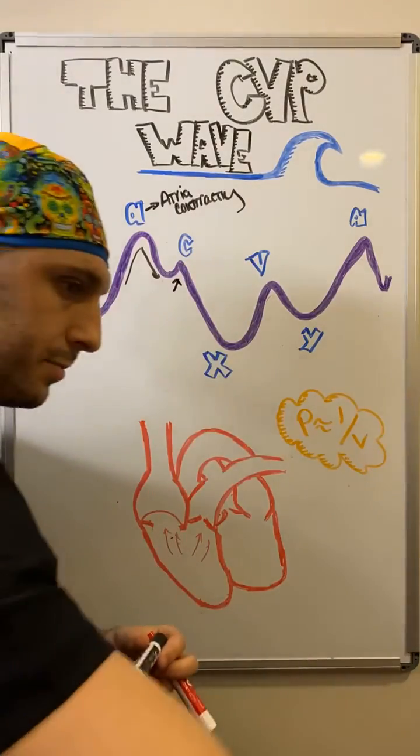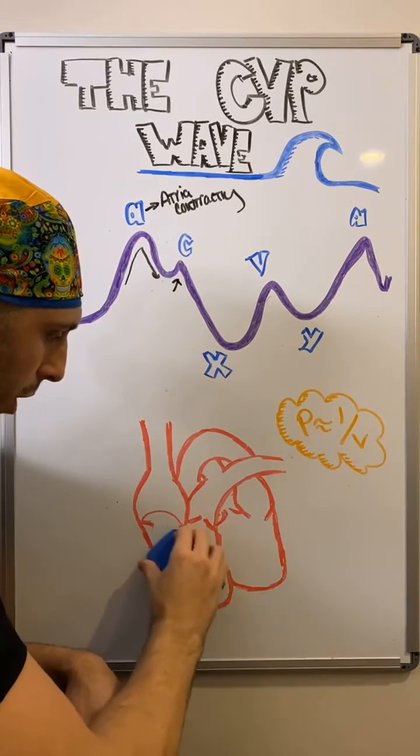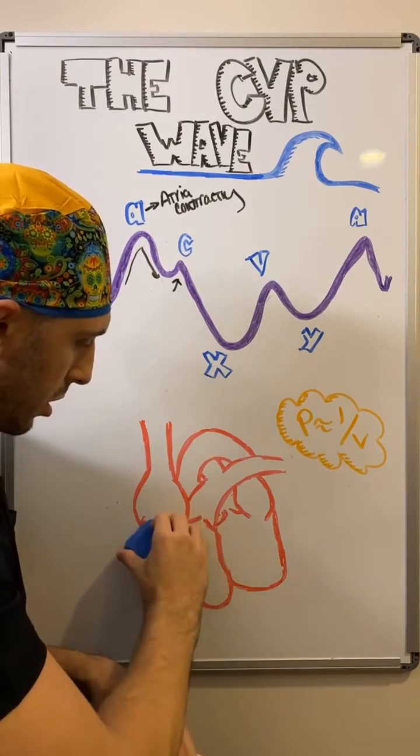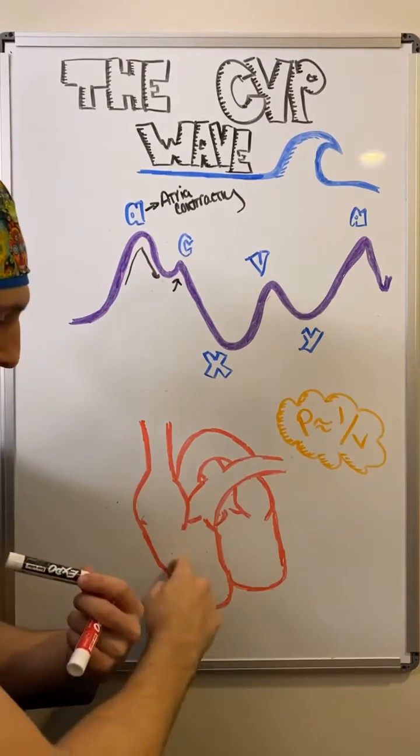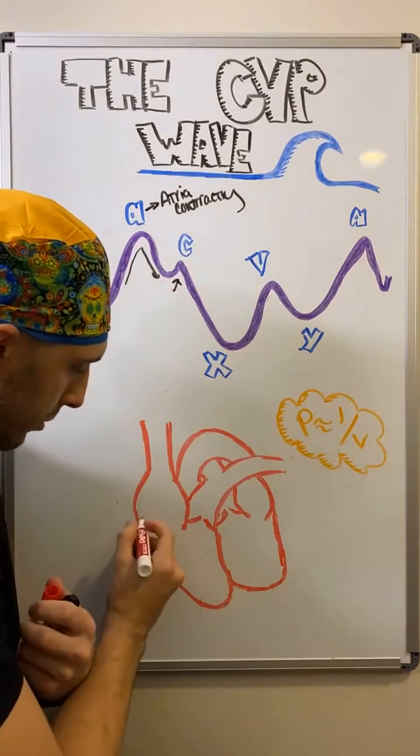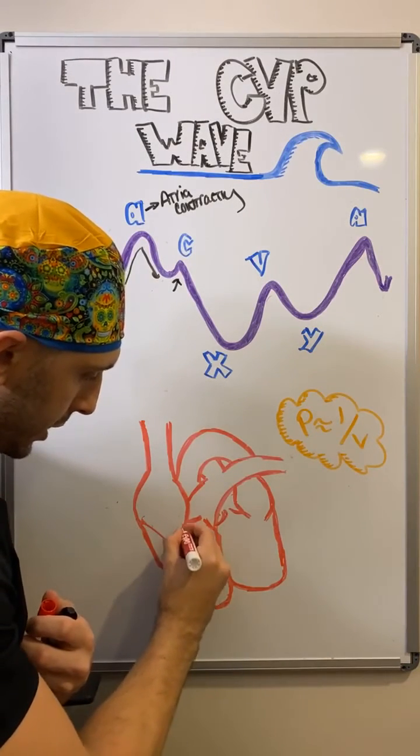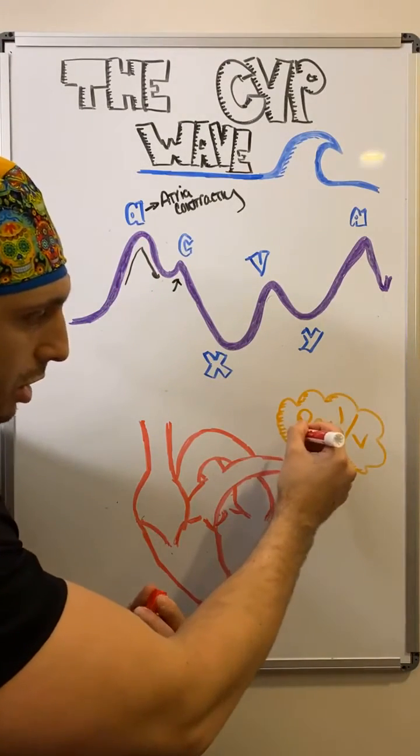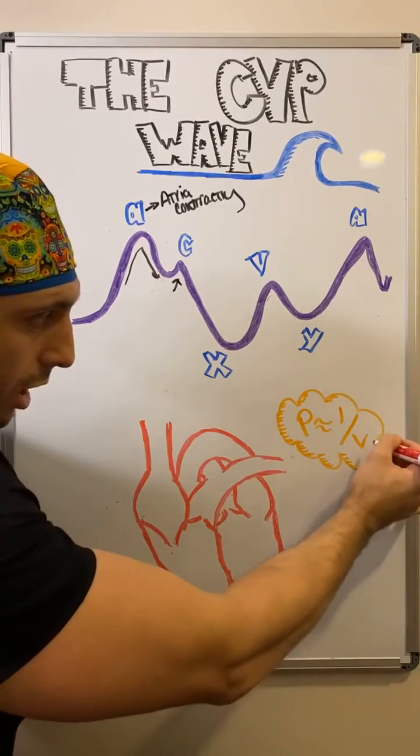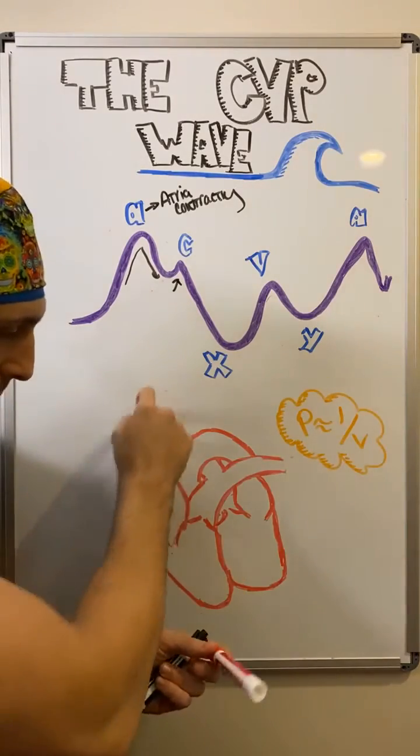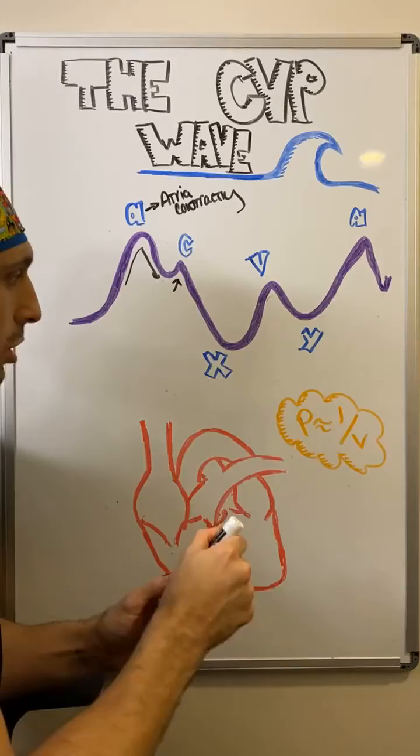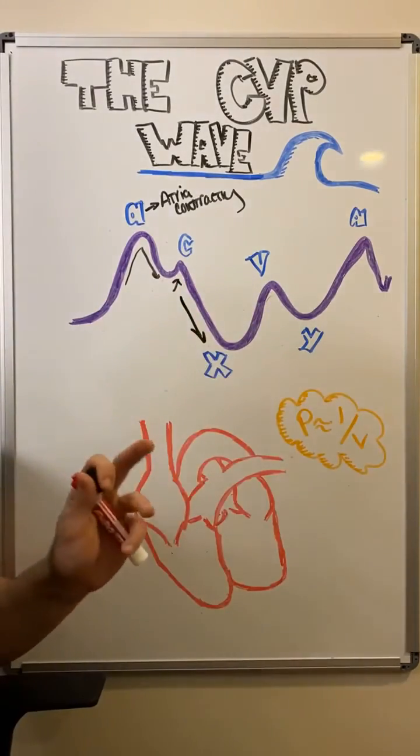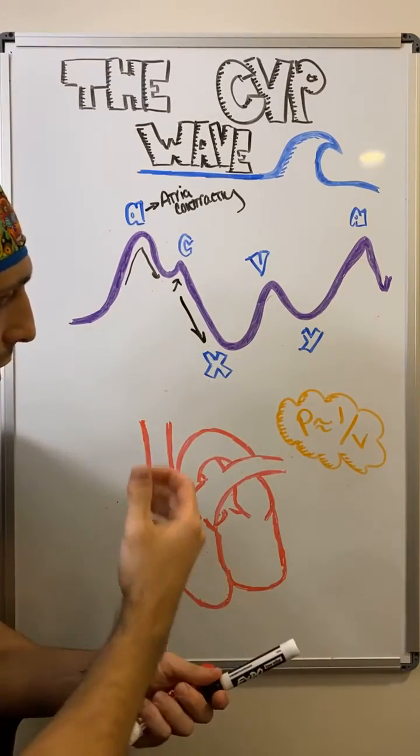Then what happens? Once our ventricle begins to empty again, there's less pressure here and the tricuspid valve can again relax and it almost dips back down into the ventricle. And as a result, our pressure drops because our volume within the right atrium and within this central venous pressure volume goes up, the pressure drops. Super simple.